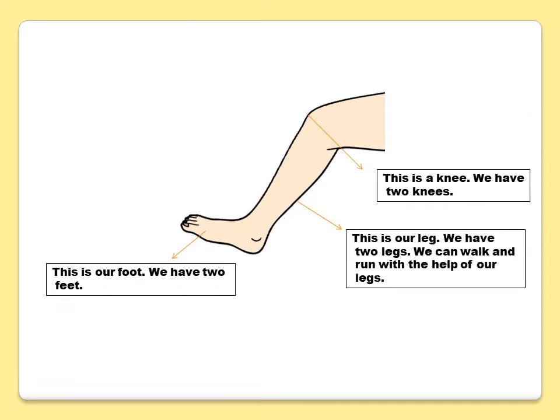This is a knee — we have two knees. This is our leg — we have two legs and we can walk and run with the help of our legs. This is our foot — we have two feet.